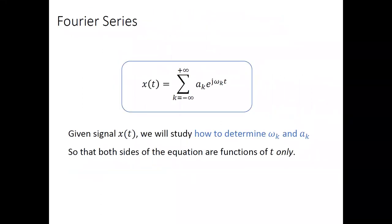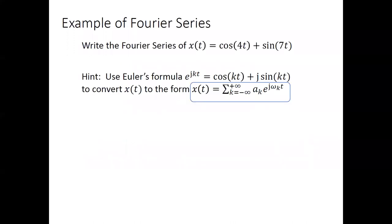We have the standard format for the Fourier series, and the focus of this chapter is to determine ω_k and a_k for each term. Once those are determined, the right-hand side contains only the variable t, consistent with the left-hand side. Now let's look at an example: the signal x(t) = cos(4t) + sin(7t). How do we write the Fourier series for this signal?